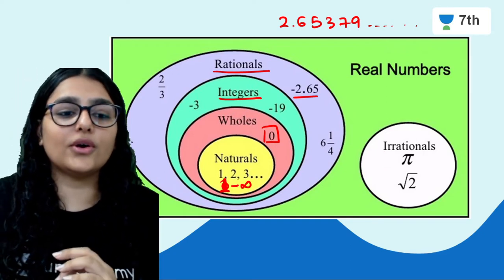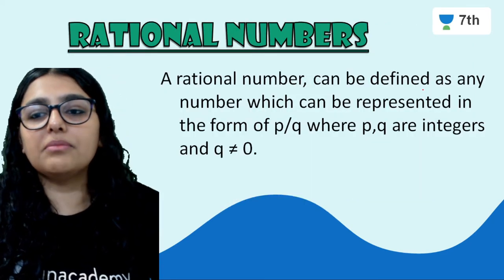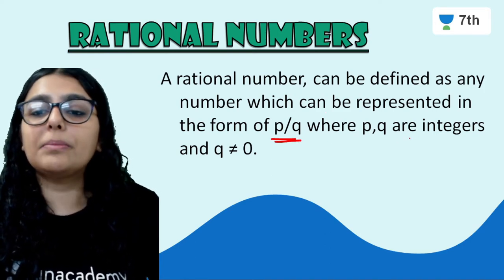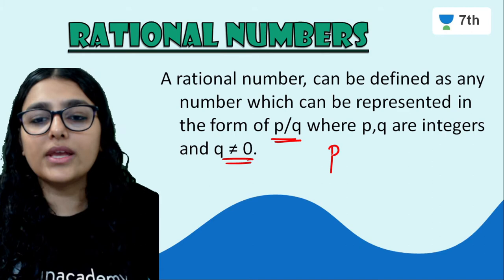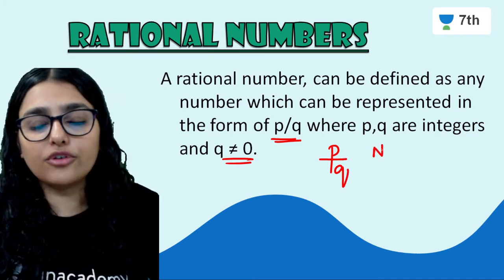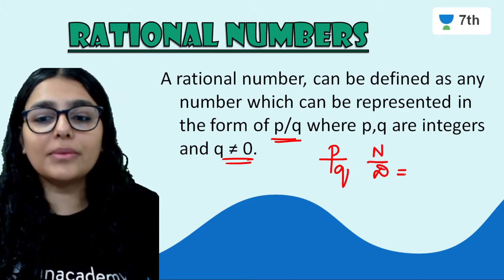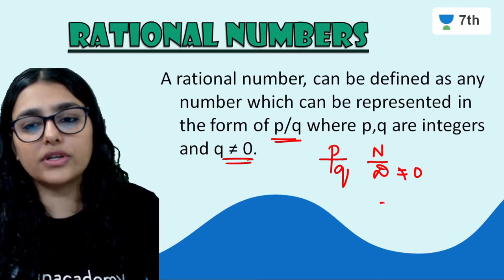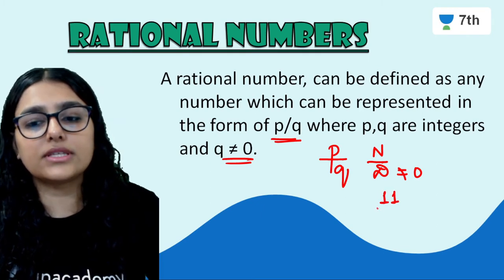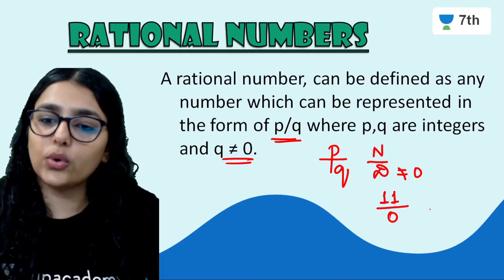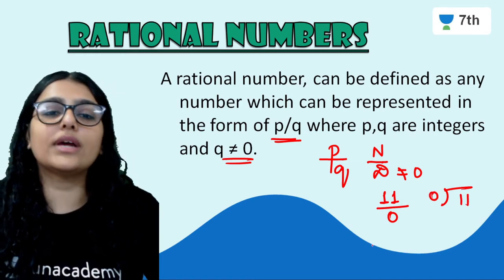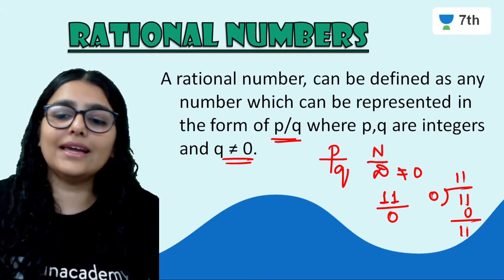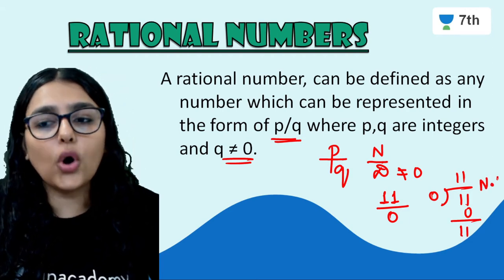The second part is irrational numbers — which are pi and root values — that you will learn in higher classes. A rational number can be defined as any number which can be represented in the form of P upon Q, where P and Q are integers and Q is not equal to 0. P upon Q means numerator upon denominator, and the denominator should not equal 0, because division by 0 is not possible — for example, if numerator is 11 and denominator is 0, you will not get any answer; the remainder keeps coming and the division is not defined.